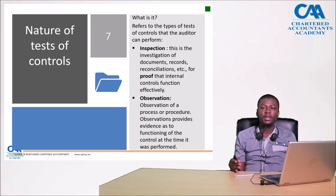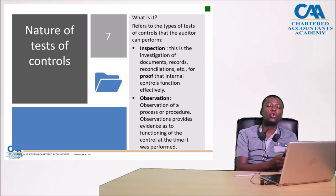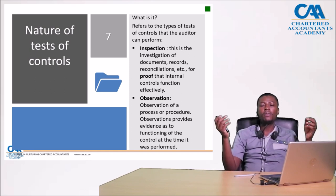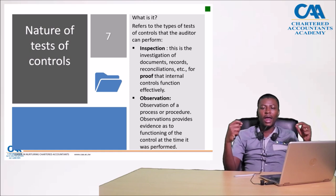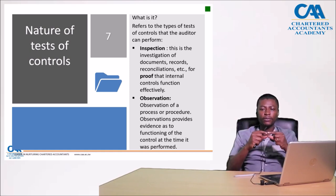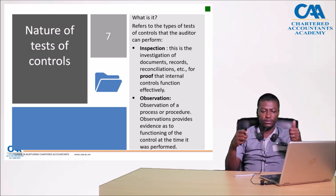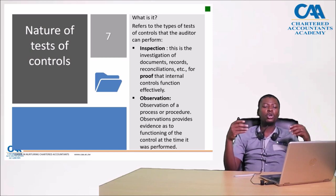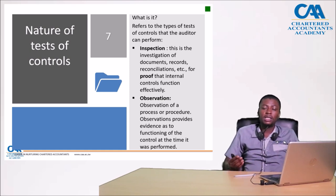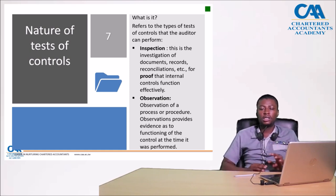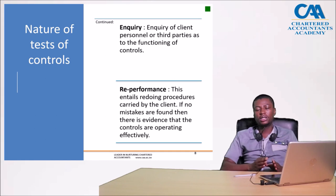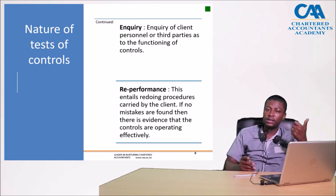Examples of inspection could be inspecting a reconciliation or inspecting a document for a signature. Or we can observe — going to the client and seeing the control activity working in real time. We can also inquire from staff at the client about the function of the control. We can also re-perform — redoing the control activity. For example, if the client says access is protected by a password, you enter a suspicious password; if the system does not permit entry, you can conclude the control is working.